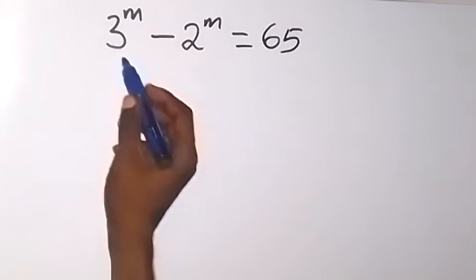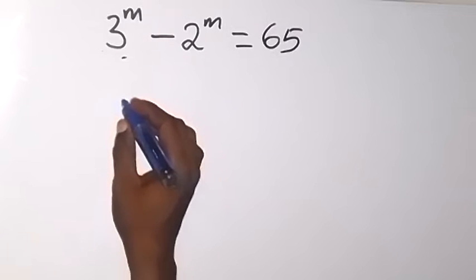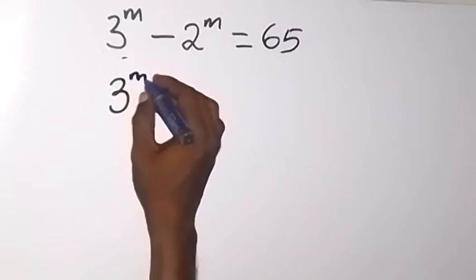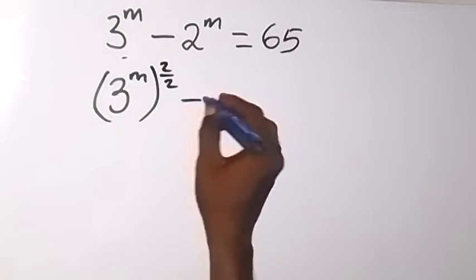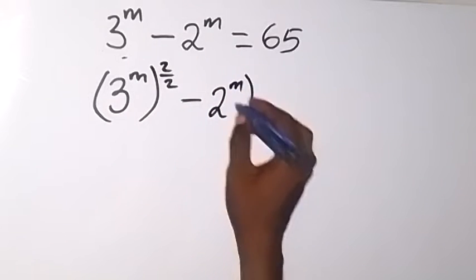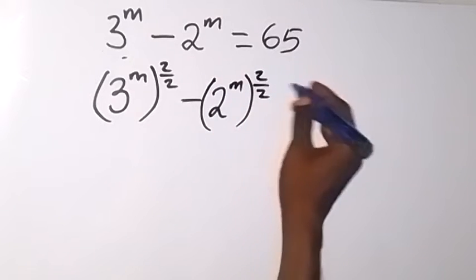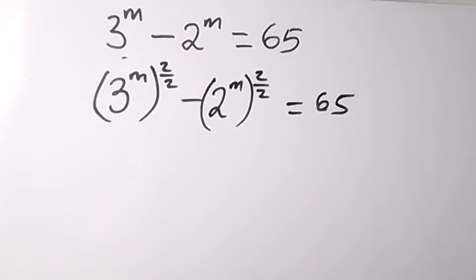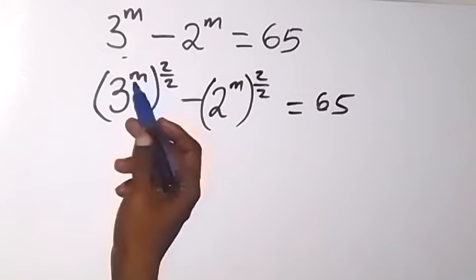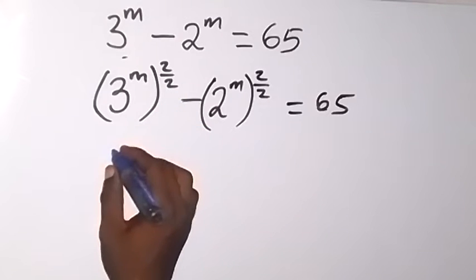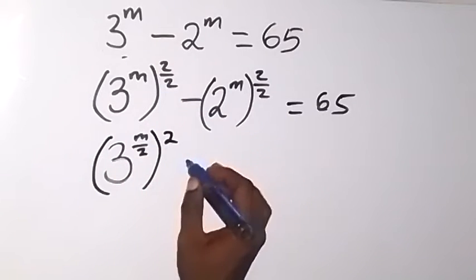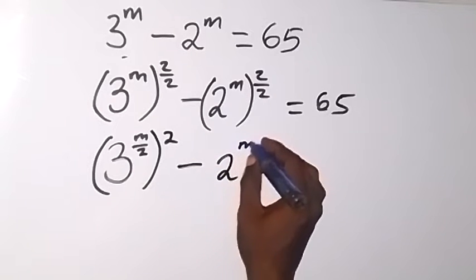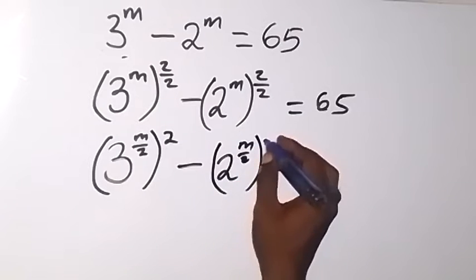Now let us multiply the power by 2 over 2, so we say 2 raised to power, raised to power 2 over 2. It's like you have not done anything because 2 over 2 is still 1. Then let's do the same thing here: 2 raised to power, then raised to power 2 over 2, equals 65. By the law of indices the powers can multiply each other, so we write this as 3 raised to power m over 2, squared, and 2 raised to power m over 2, squared, equals 65.